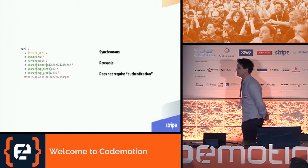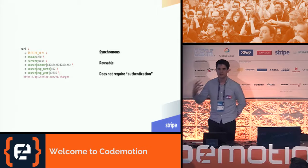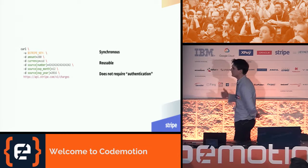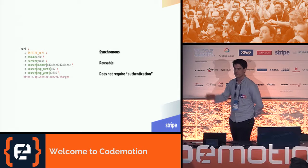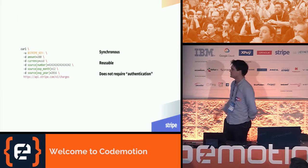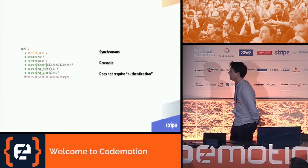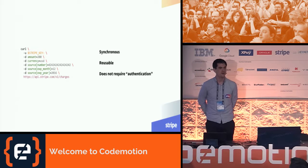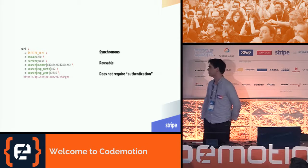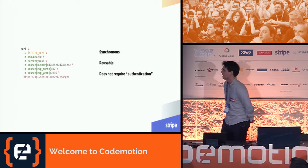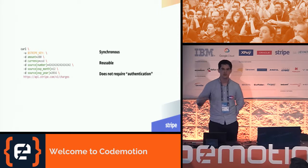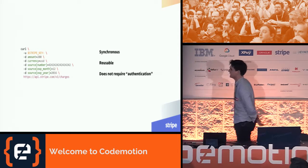It assumes that the payment method is synchronous — that you get an instantaneous answer on whether the payment is successful or not. It assumes that the payment method is reusable, because you can use those 16 digits as many times as you want. And it also assumes that the payment method does not require any form of additional authentication — the digits are the secret and you don't have a 2FA or redirect to authenticate.